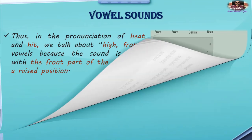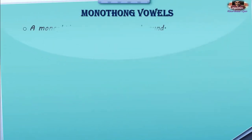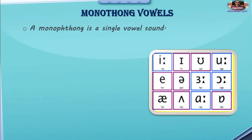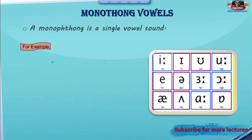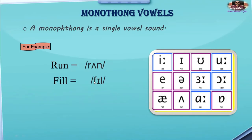Vowel sounds are divided into monothongs and diphthongs. A monothong is a single vowel sound. If we look at the IPA chart, monothong vowels are single vowel sounds that occur between two consonant sounds — for example, 'run', where there is one vowel sound between two consonants, or 'full', where between the consonants 'f' and 'l' there is a single vowel sound. Similarly, 'man' contains a monothong vowel.